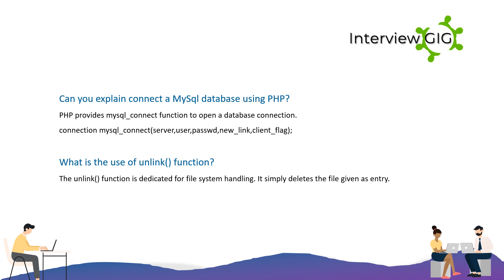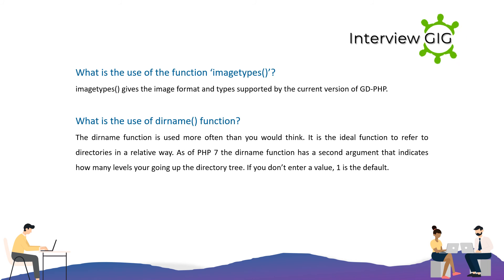What is the use of the unlink() function? The unlink() function is dedicated to file system handling — it simply deletes the file given as its argument. What is the use of the imagetypes() function? The imagetypes() function gives the image formats and types supported by the current version of GD in PHP.